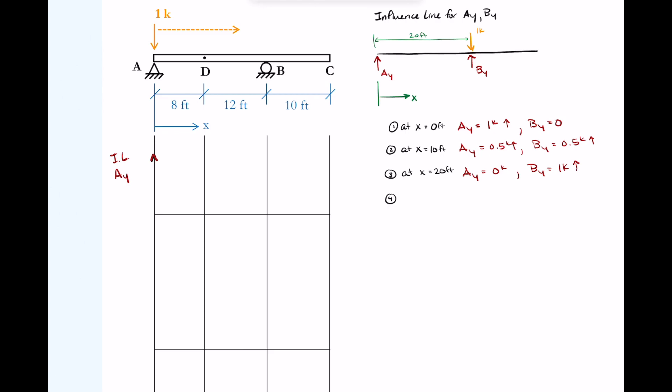Lastly, I'll look at a point where x equals 30 feet, when the one kip load is at point C. This is maybe not as straightforward, so I'm going to use statics. I'll sum moments about point A: BY times 20 feet minus one kip times 30 feet equals zero. This gives me BY = 30 over 20 or 1.5 kips upward. Then I sum forces in the Y direction to solve for AY. AY would now be negative 0.5 kips, pointed in the downward direction.